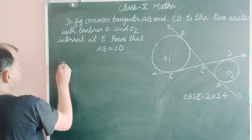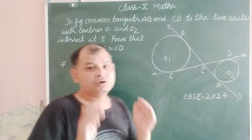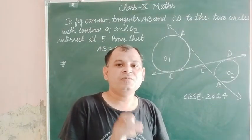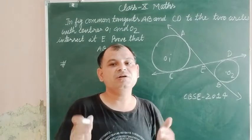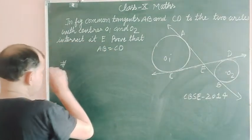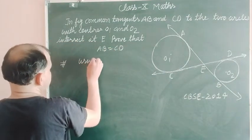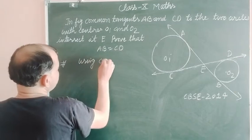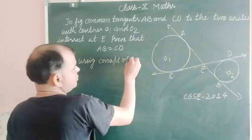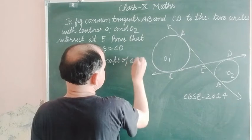As you know, two tangents can be drawn from an exterior point to a circle which are equal in length. So we use this concept of tangents having equal length from an external point.